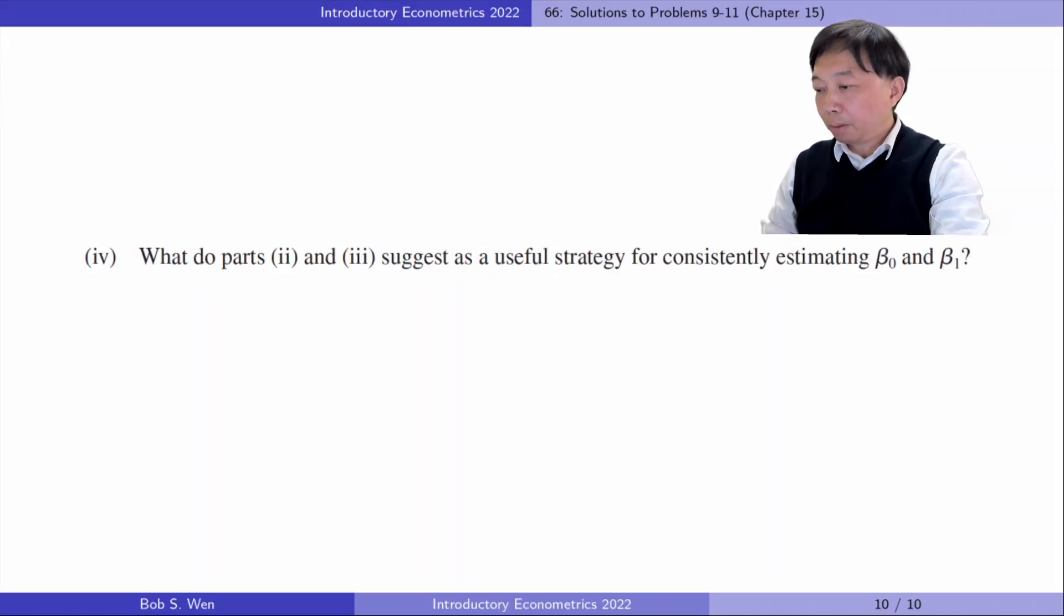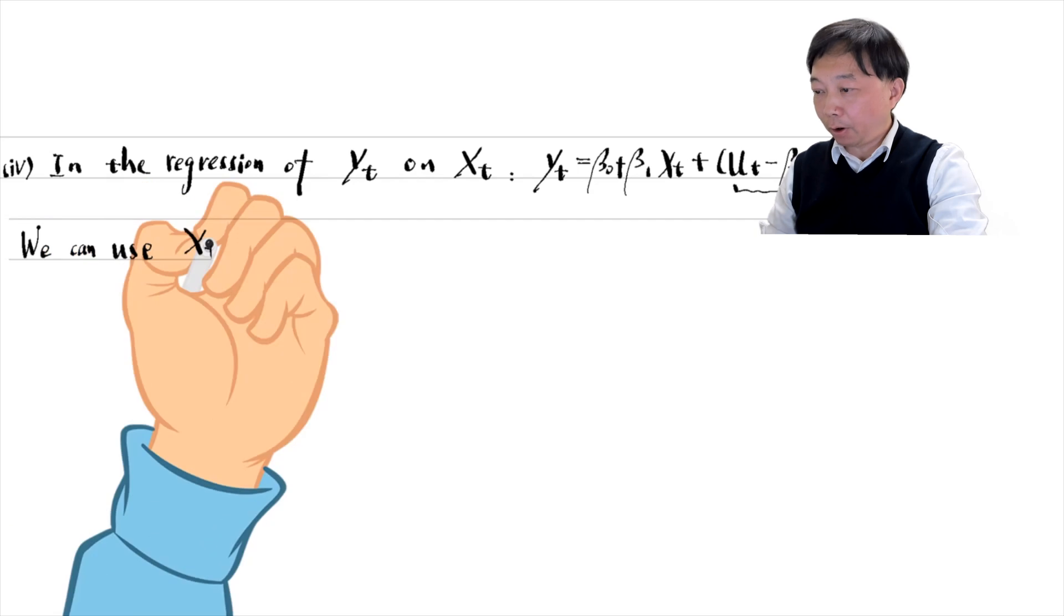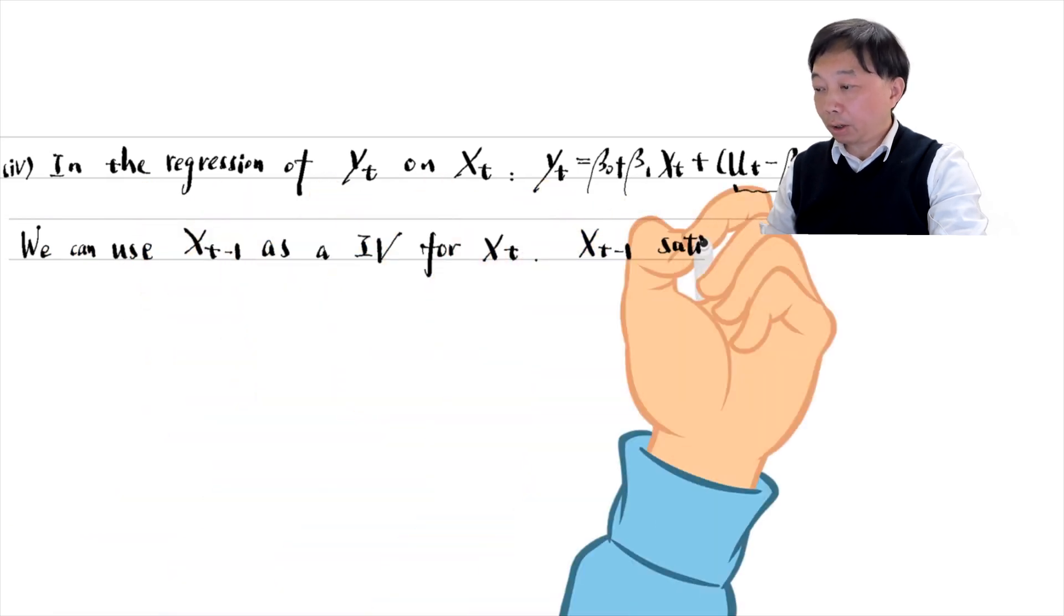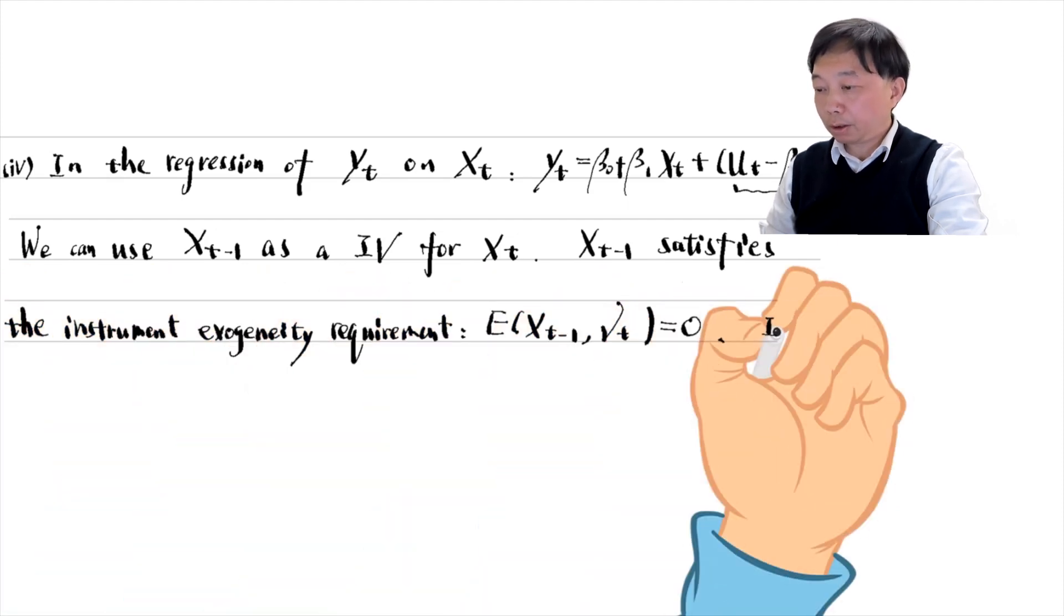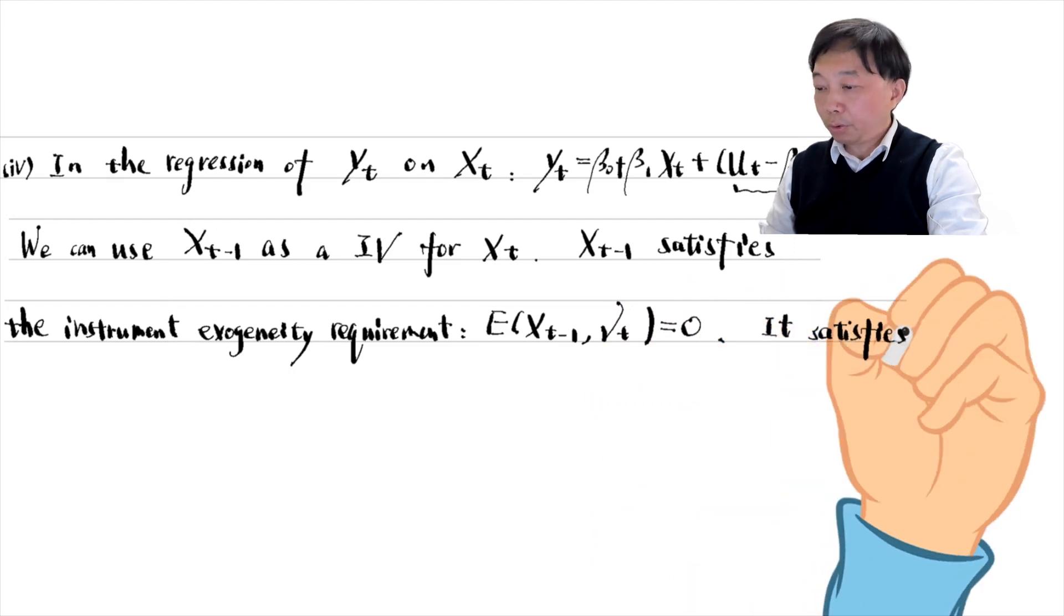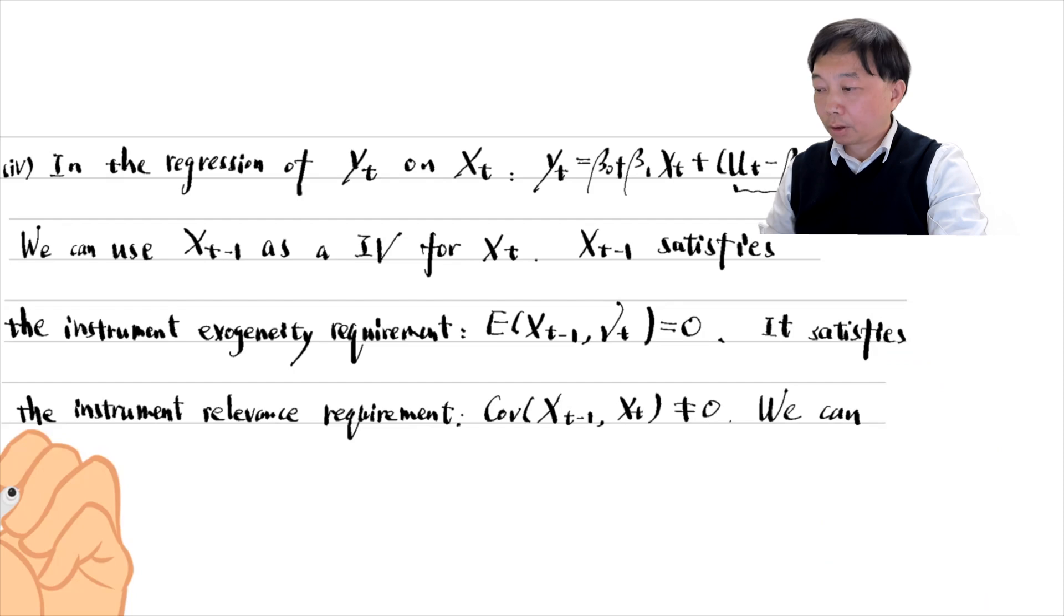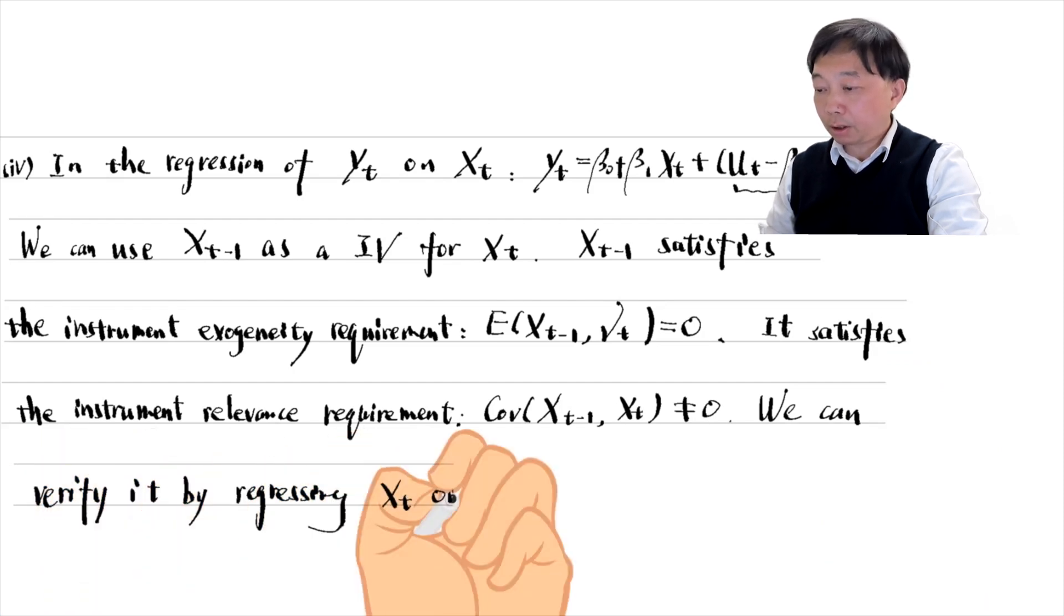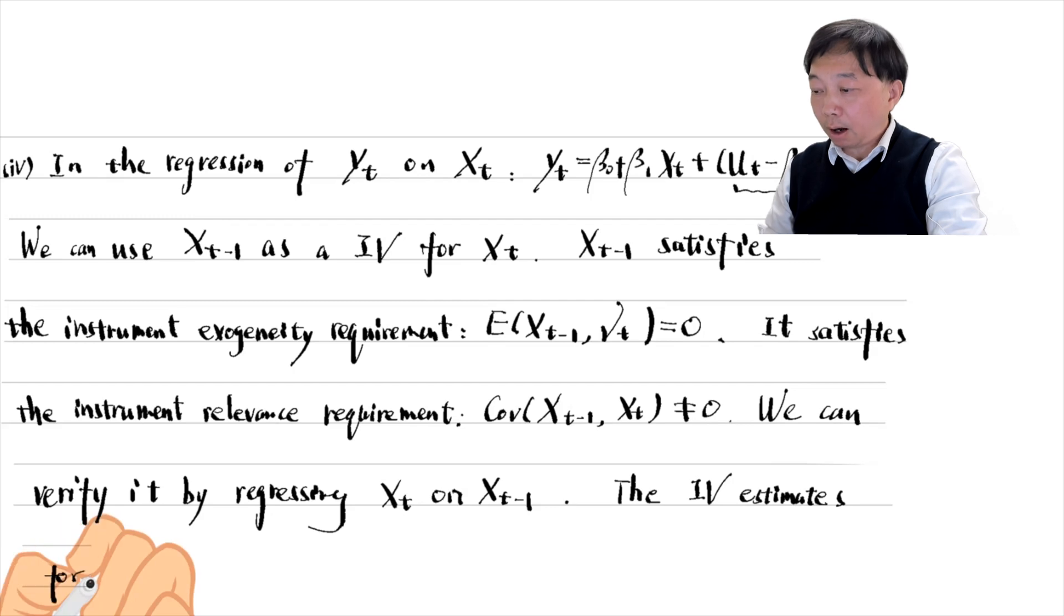In part 4, what do parts 2 and 3 suggest as useful strategy for consistently estimating β0 and β1? In the regression of yt on xt, we can use xt minus 1 as an instrumental variable for xt because xt minus 1 satisfies the instrument exogeneity requirement. It is not correlated with νt. It also satisfies the instrument relevance requirement. xt minus 1 is correlated with xt. We can verify it by regressing xt on xt minus 1. The instrumental variable estimates for β0 and β1 are consistent.